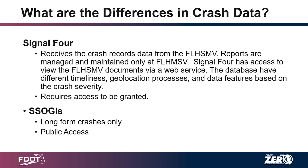The differences: Signal 4 receives crash data records from FLHSMV. Reports are maintained only by FLHSMV; you have access to view them via the web service. The database differs a bit on timelines, geolocation, and other data features, and it requires access to be granted. With a DOT account you have basic user access; getting further in and accessing actual crash reports requires additional approval. It has long-form and short-form crashes. SSO GIS is long-form only in its public access.